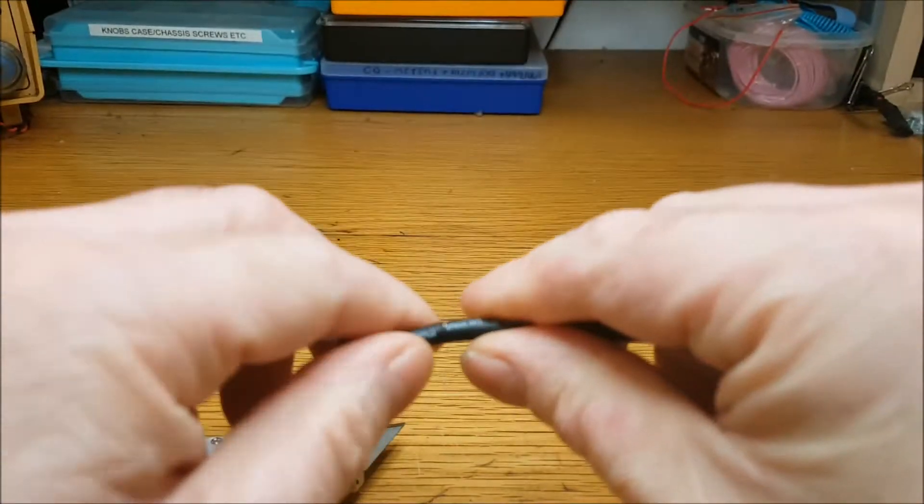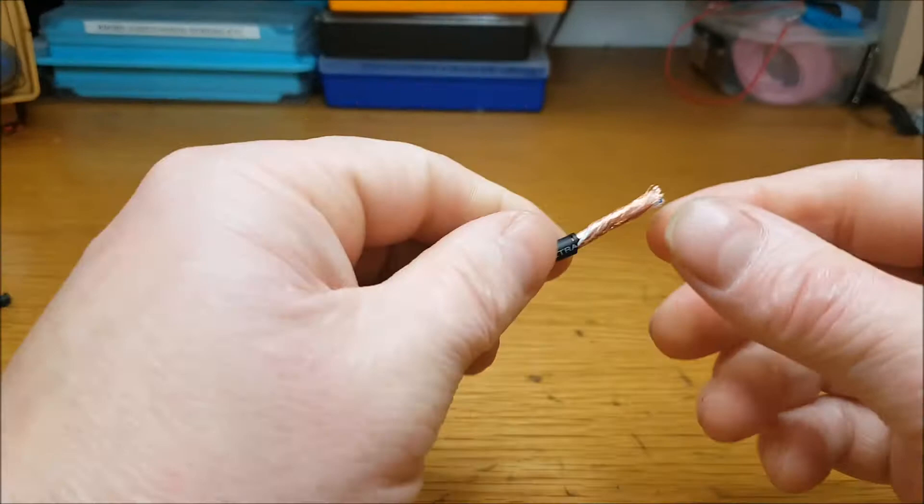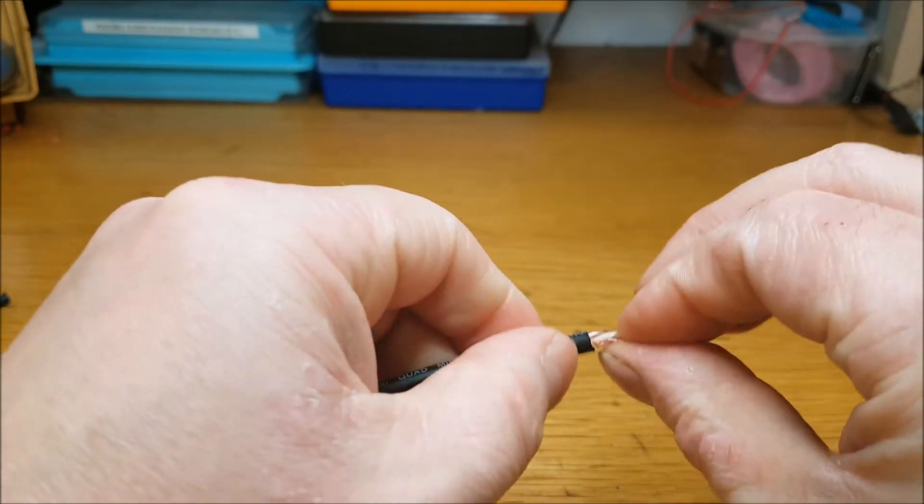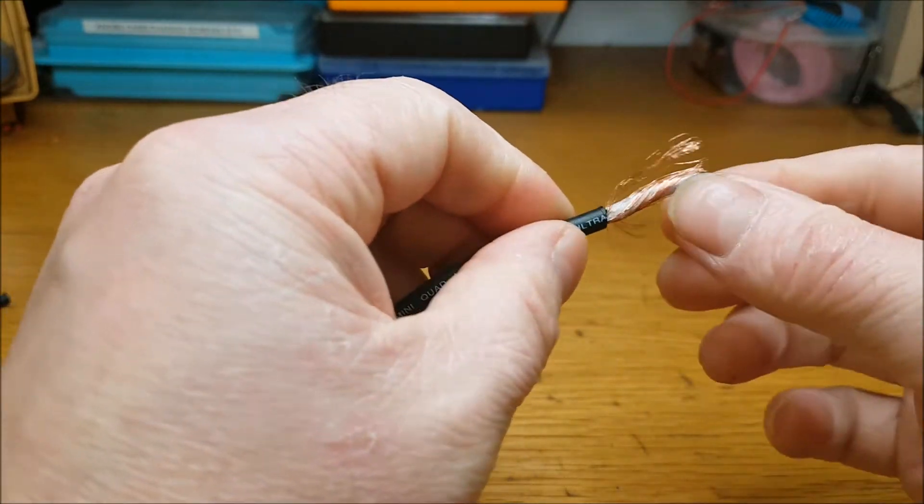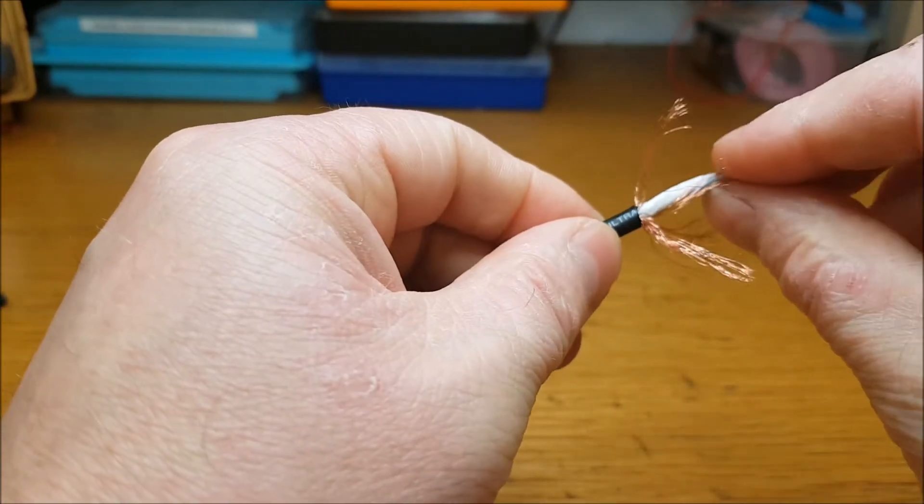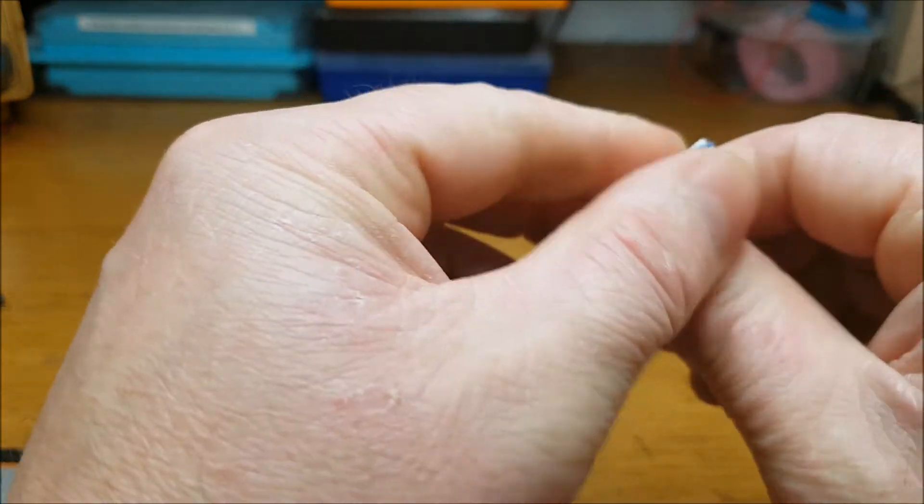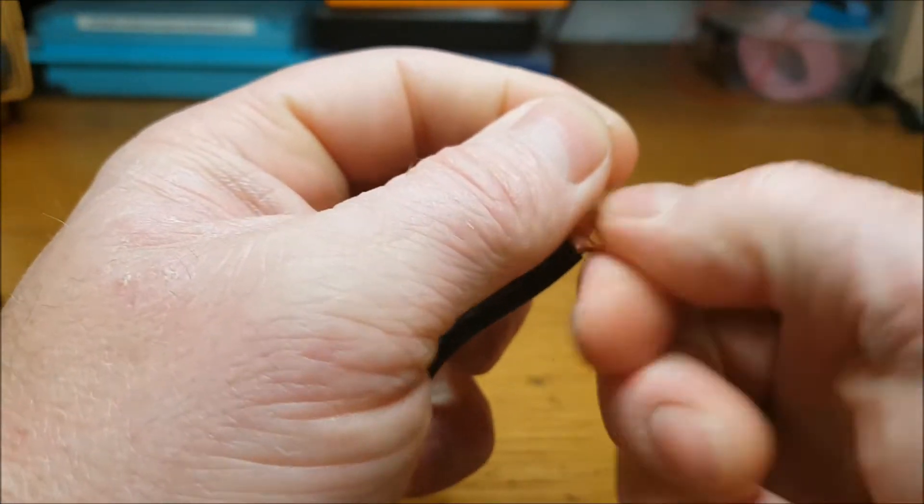So here's what you end up with. I always untwist the braid. Make sure you get it all—you don't leave any stray bits there. What I do is I twist it like this and just leave it off to one side.